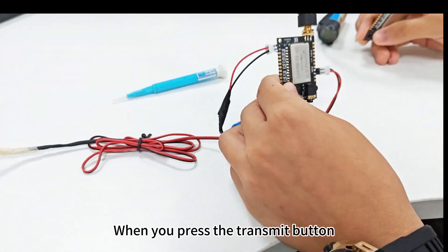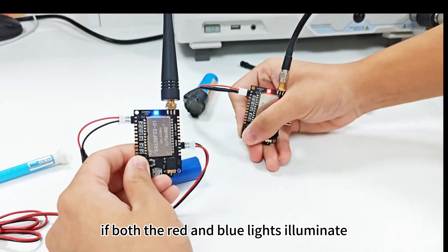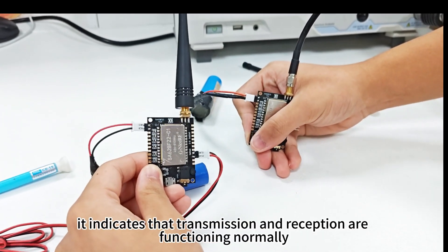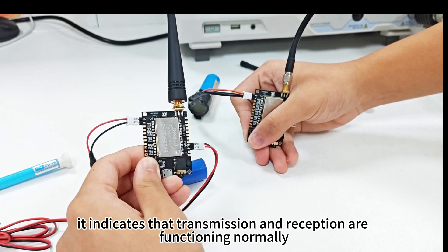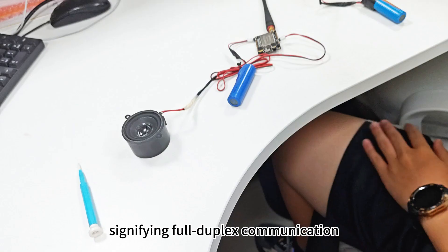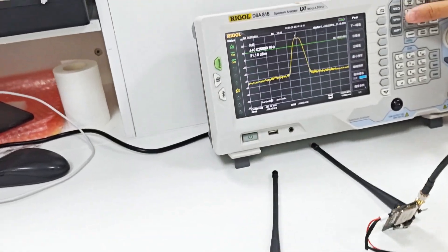When you press the transmit button, if both the red and blue lights illuminate, it indicates that transmission and reception are functioning normally, signifying full duplex communication.